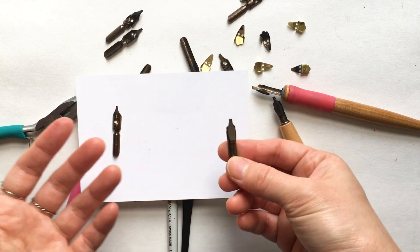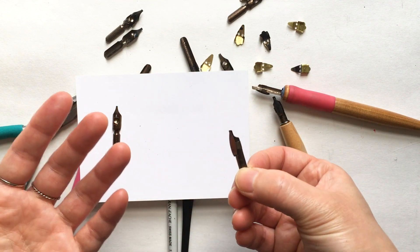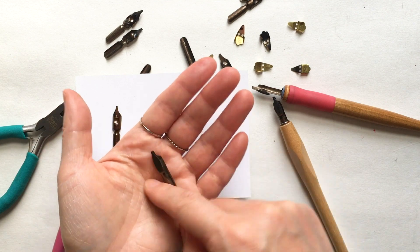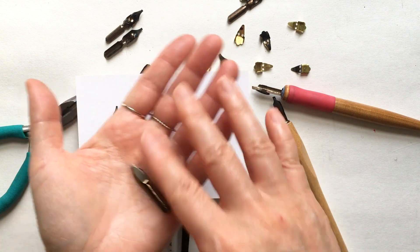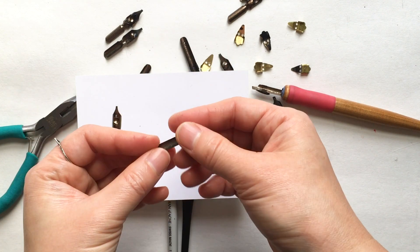There are two things you can do. One is simply wash your nibs in soap, so just have a little bit of soap and water, and then rub it with your hand and rinse it off. Make sure you dry it thoroughly so it doesn't get rust.